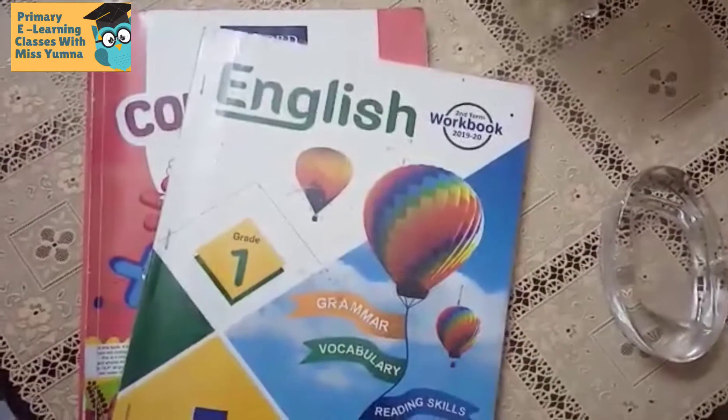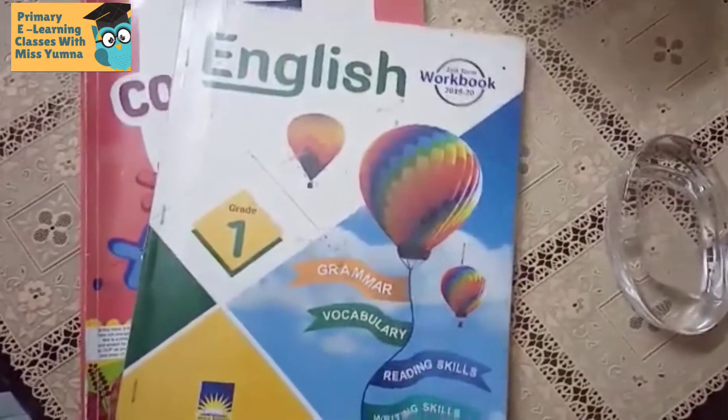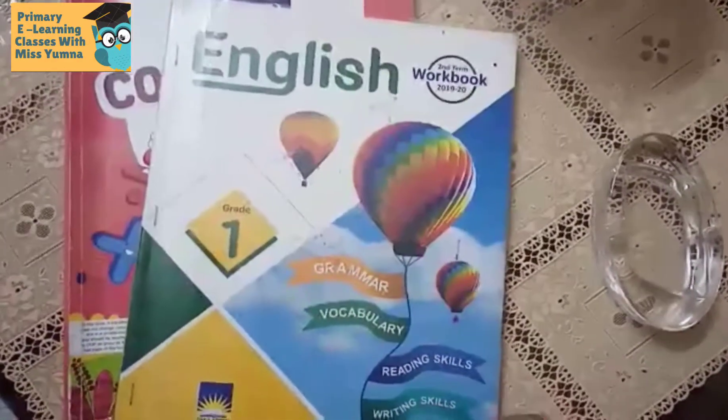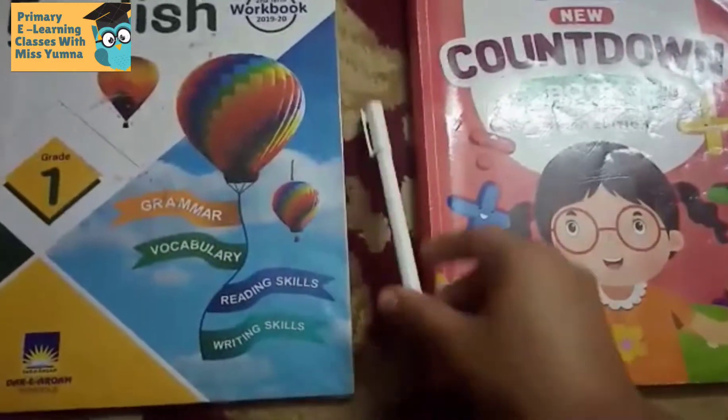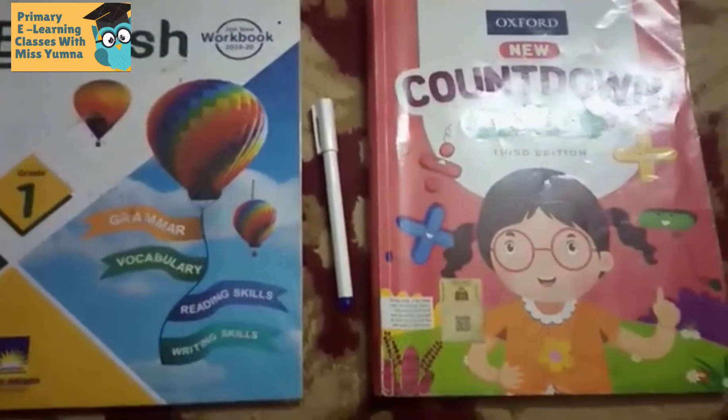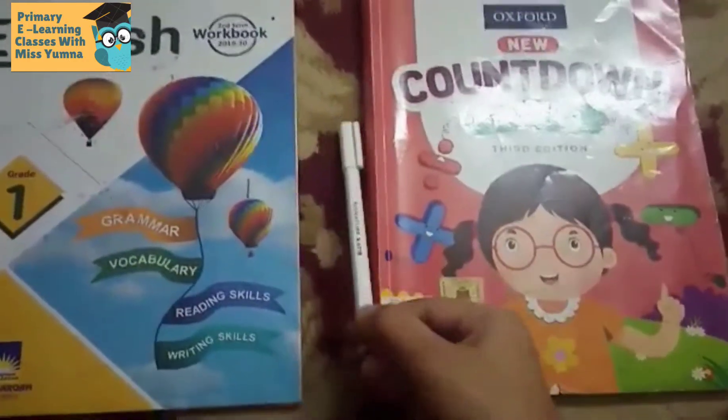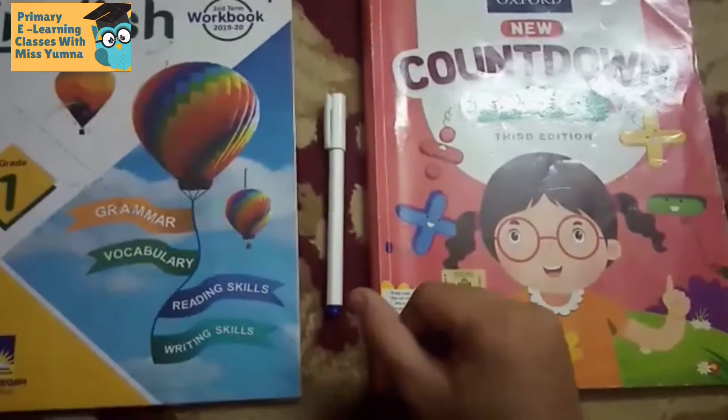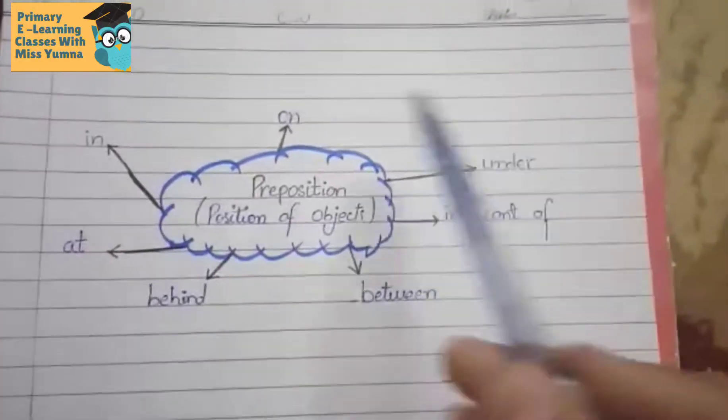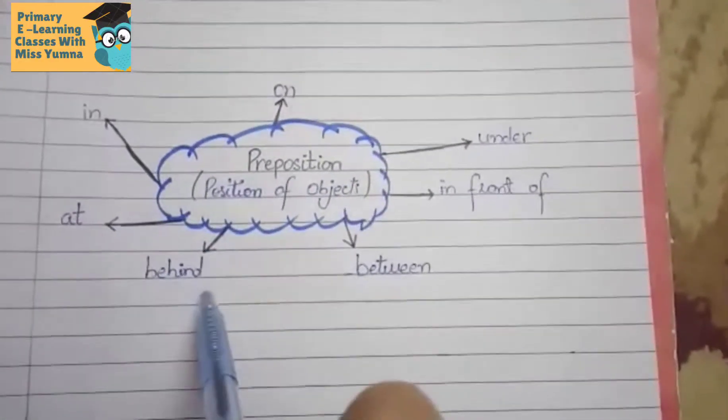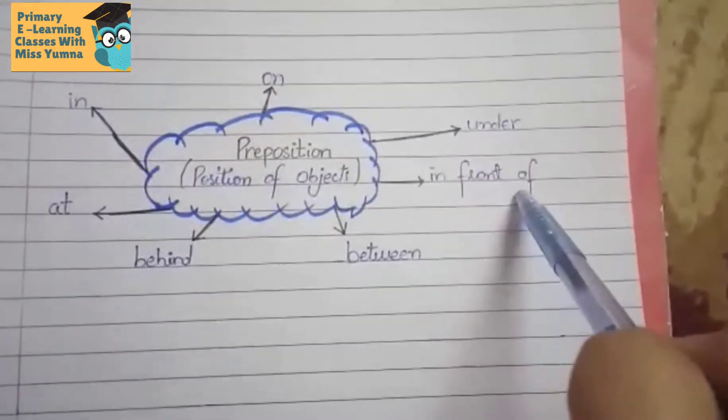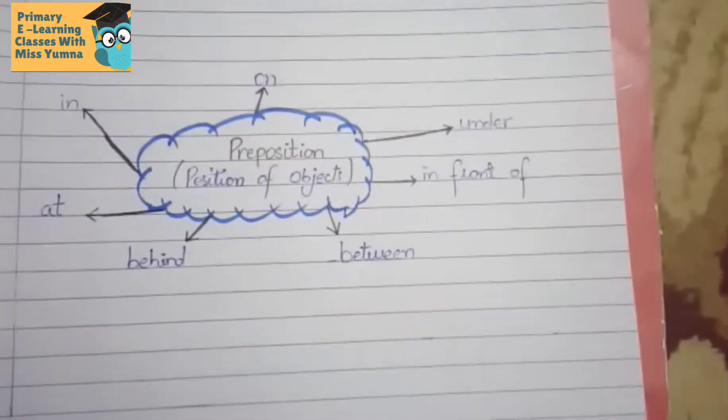So here we know the position of pencil is in the book. These are books. Books are on the table. Here we know the position of books are on the table. This marker is between the books. Marker is in the center of the book. In, at, behind, between, in front of, under - these all are called preposition.